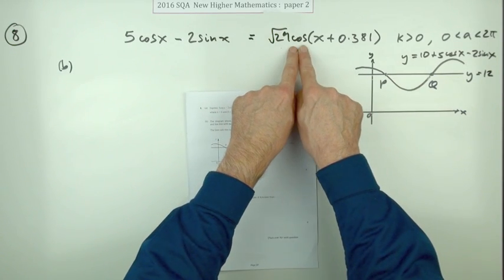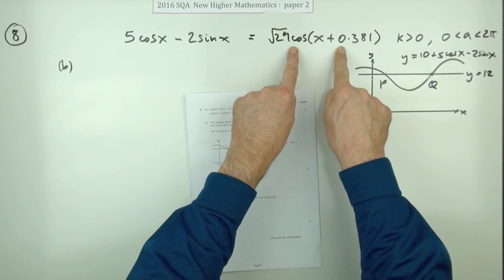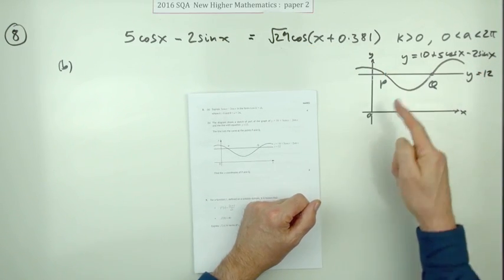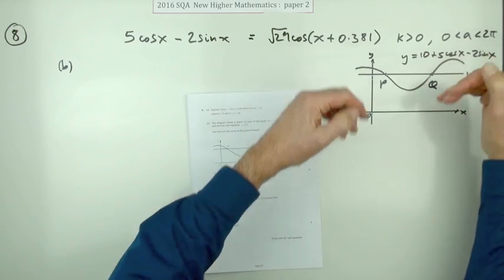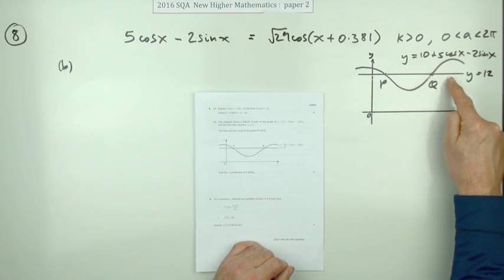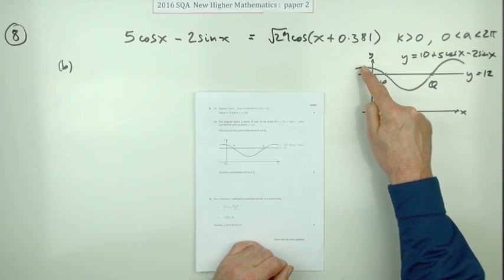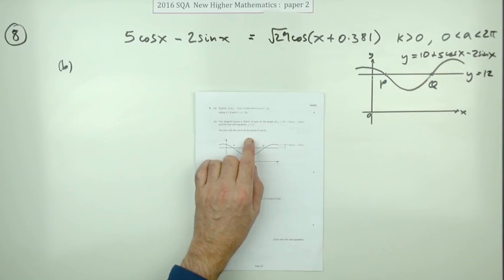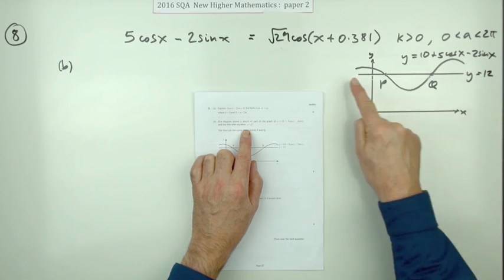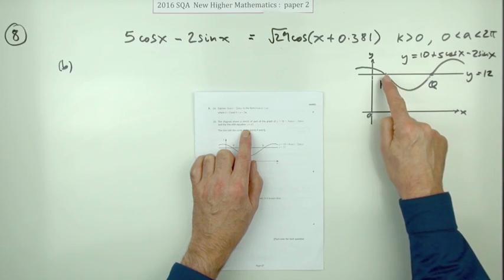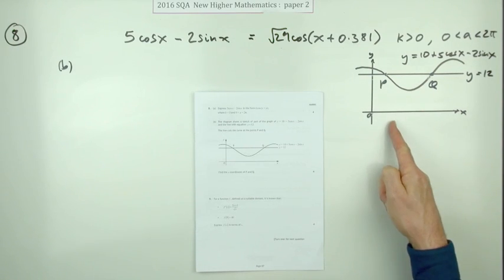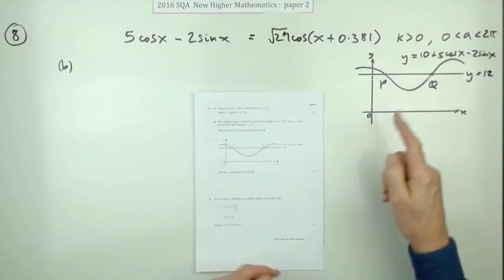This is equivalent to this cosine, which has been shifted back (so instead of starting at the top it's gone back a bit), and plus 10 simply means it all lifts up. So 10 plus means it oscillates about the line y equals 10, going up root 29 and down root 29. It shows part of that graph, and this horizontal line (the line with the equation y equals 12) intersects at these two places. It simply says: what's the x coordinates? Those will be angles - what are the x coordinates of p and q?